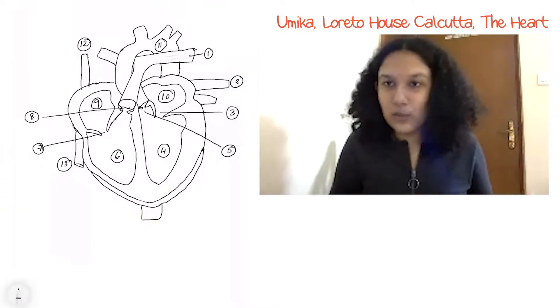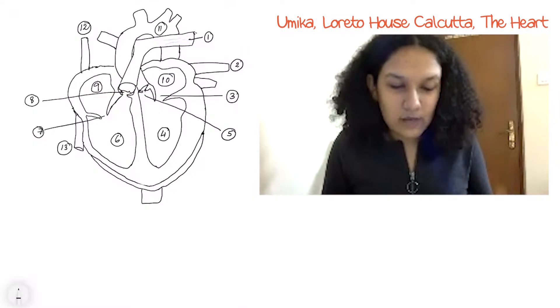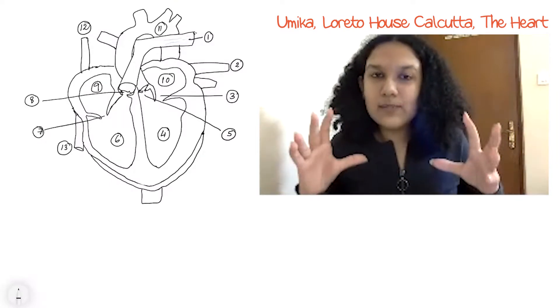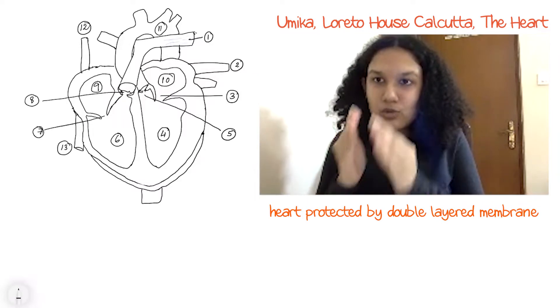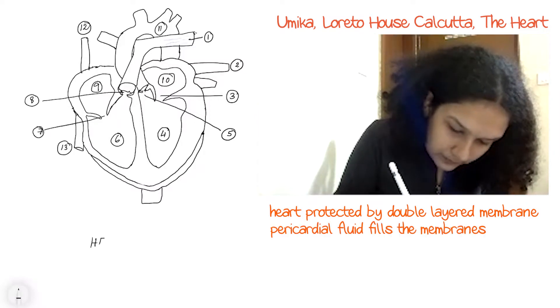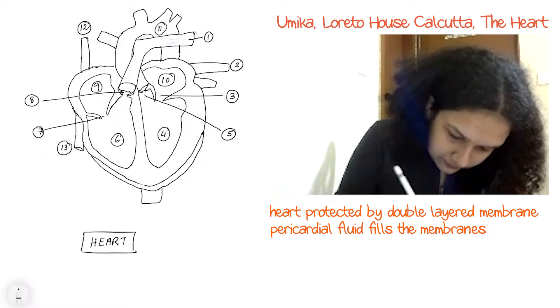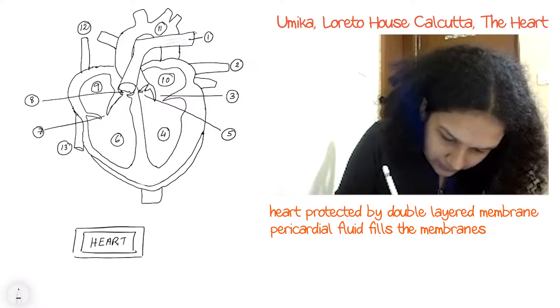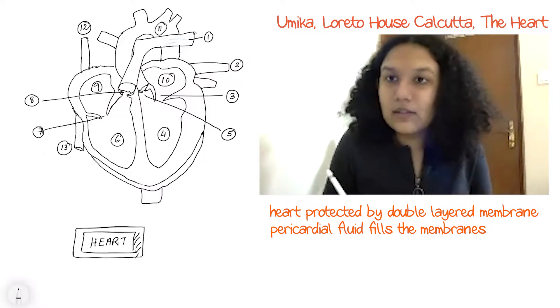Now let's talk about the internal structure of the heart. I'll share my screen and show you what it roughly looks like — I have a not-so-great diagram, but that's roughly what it looks like. The heart is protected by a double-layered membrane, and the fluid that fills the two membranes is called the pericardial fluid. This double-layered membrane is called the pericardium.